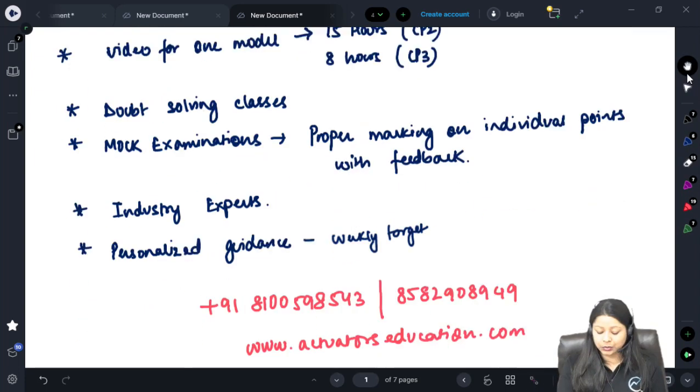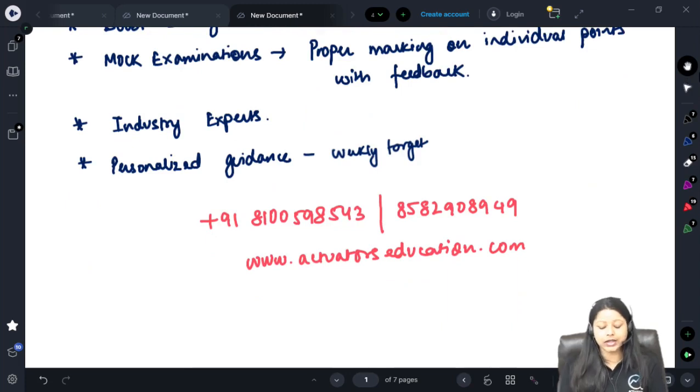Now in order to connect with us you can contact us on 8100-598-543 or 858-290-8949. You can also visit our website www.actuatorseducation.com. Thank you.